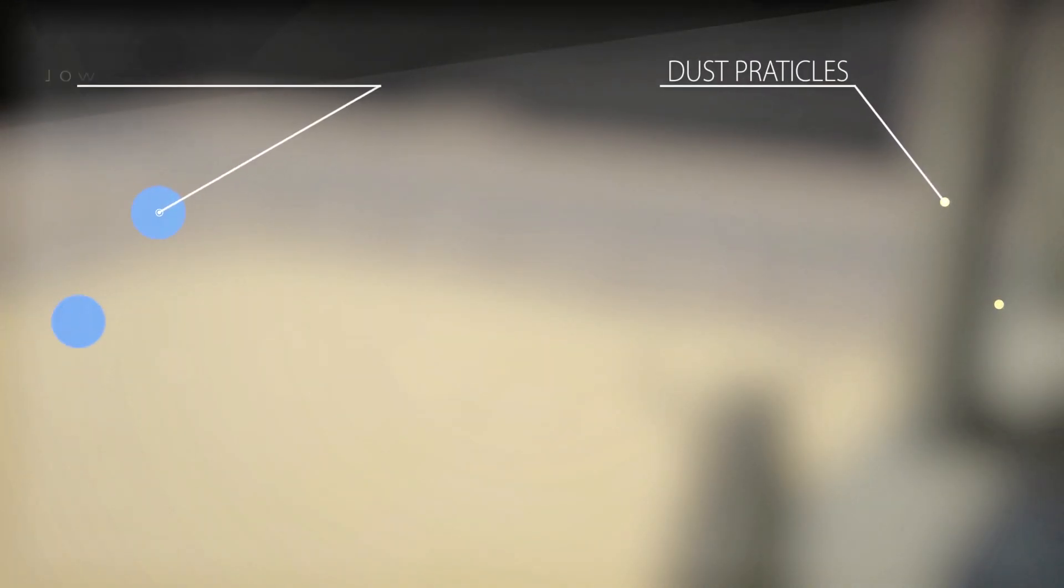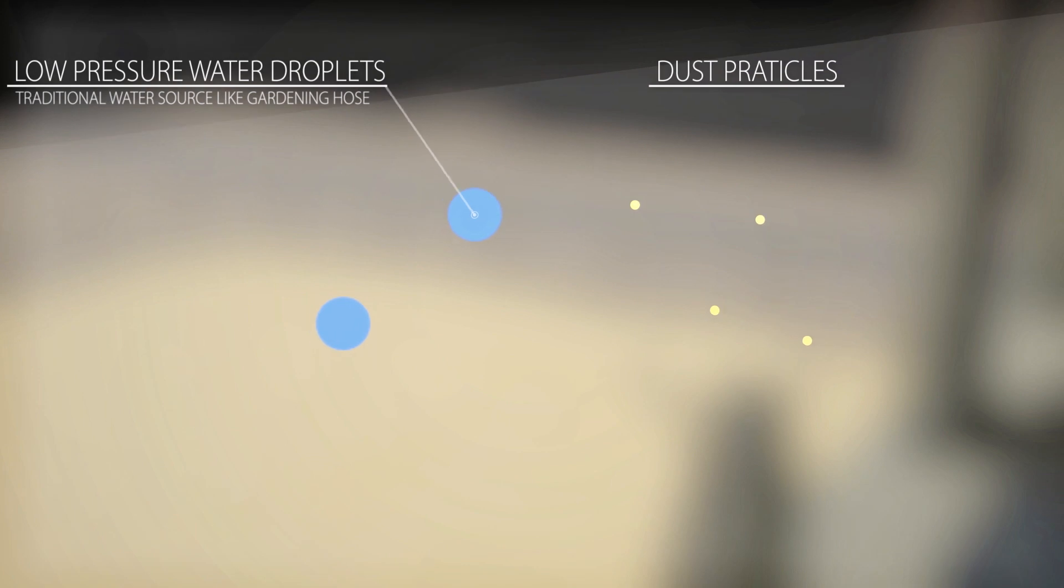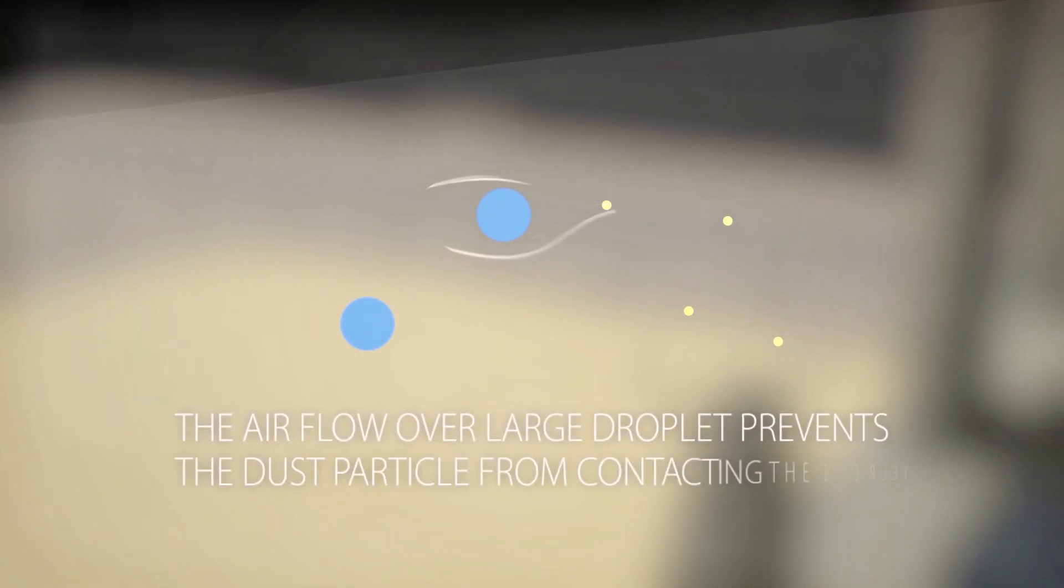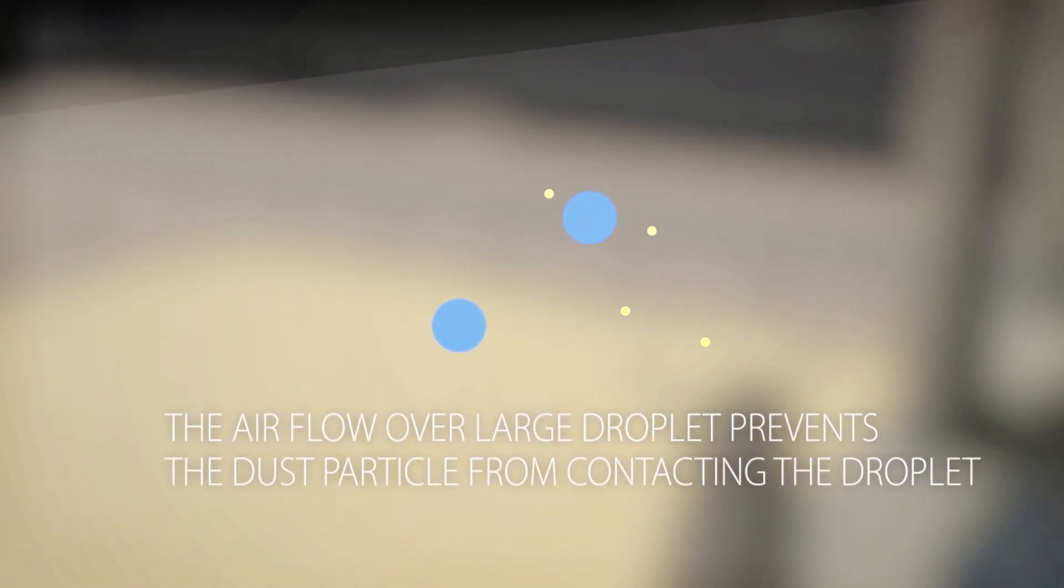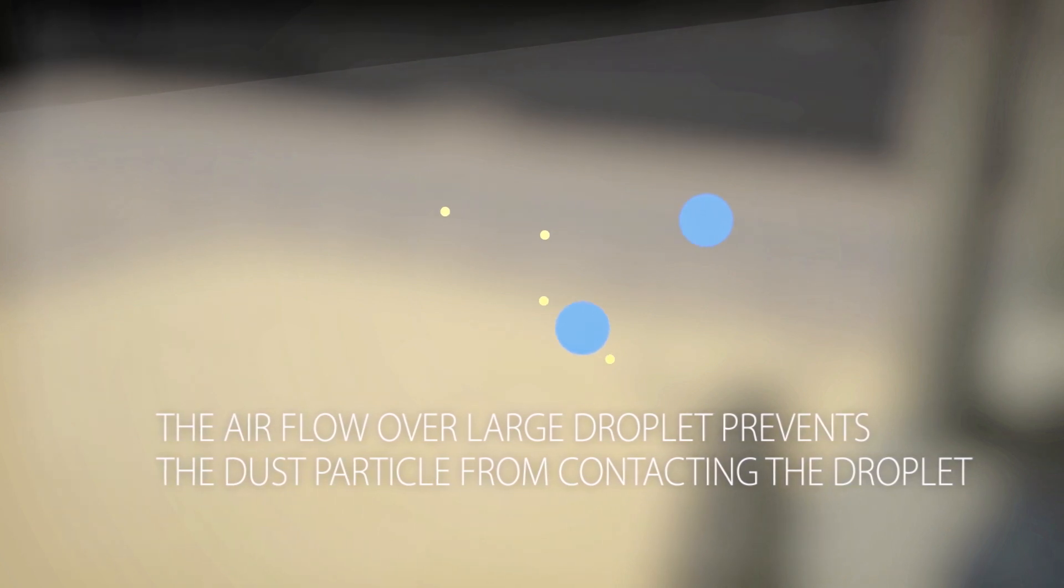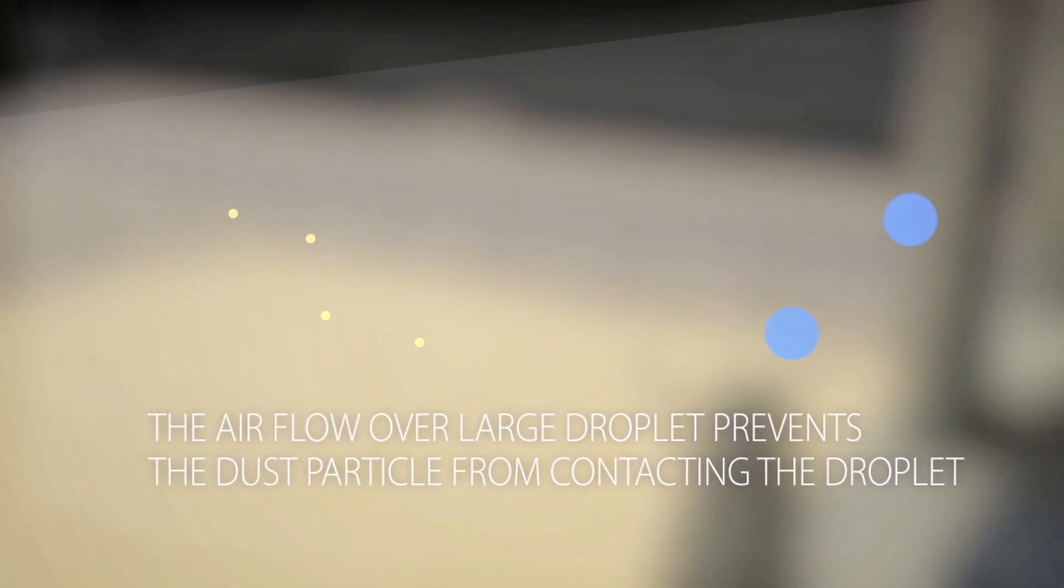When watering the worksite with traditional low-pressure dust suppression system like a garden hose, the airflow over the large water droplets prevents the dust particles from contacting the water droplets. In this case, the dust particles continue flying around them.